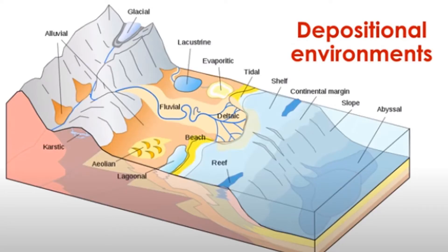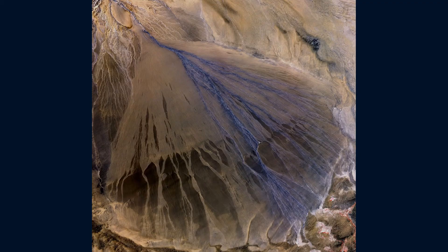Because alluvial and fluvial environments flow through and stem from many other environments, they have multiple facies associations, such as deltaic, glacier, or lacustrine environments. Alluvial environments also tend to deposit detritus into tidal flats, aeolian dunes, or ephemeral lakes. Alluvial fans are the most dependent on tectonics out of all of the fluvial environments because they rely on high relief to allow for the water and debris to form the fan shape.